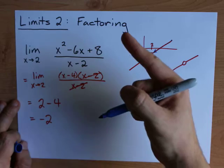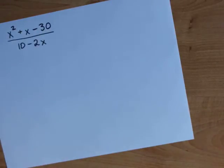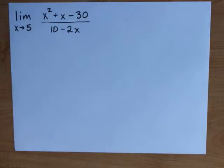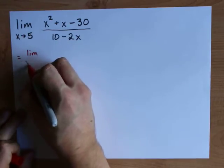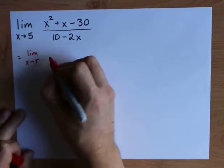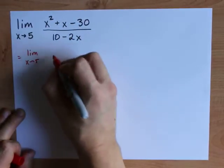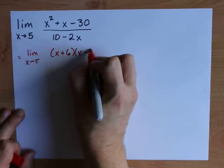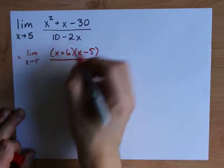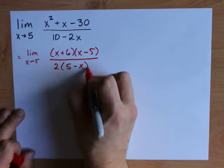Yeah, factoring is easy. Factor, cancel, figure it out. It's not too bad. Let's do one more example. Here's another one with a quadratic on top. I'm going to factor it. Now I'm actually going to factor the top and bottom here, just so you can see that it's possible. I want two numbers that multiply to negative 30 and add to 1. That's going to be positive 6 and negative 5. And in the bottom, I notice that there's a common factor of 2, which gives me 5 minus x.